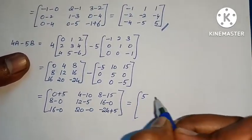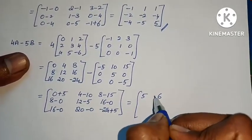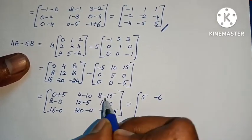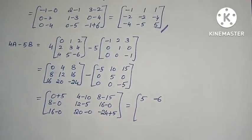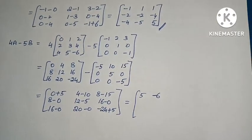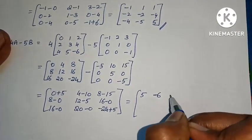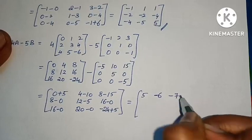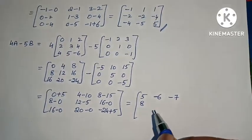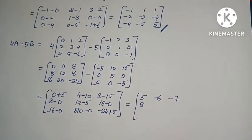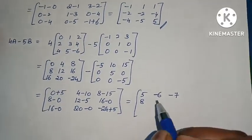Computing the values: 10 minus 4 is 6; minus symbol — 15 minus 8 is 7; 8 minus number, minus symbol: 8; 12 minus 5 gives 7; 16, 16, 20; 20 minus 14 gives 6, 7.